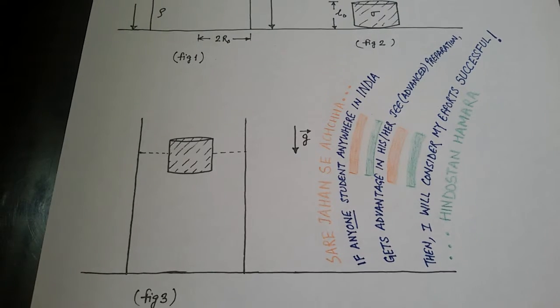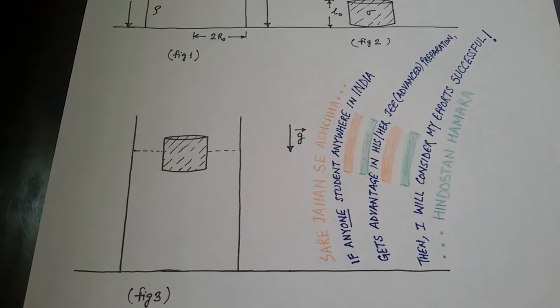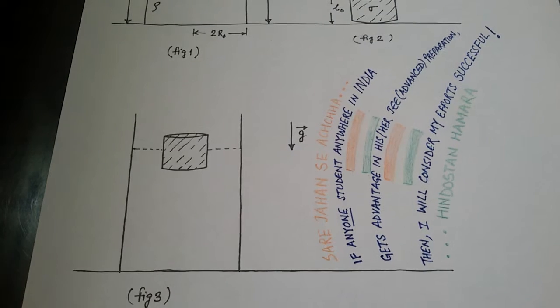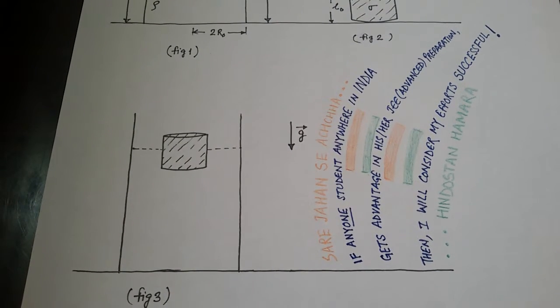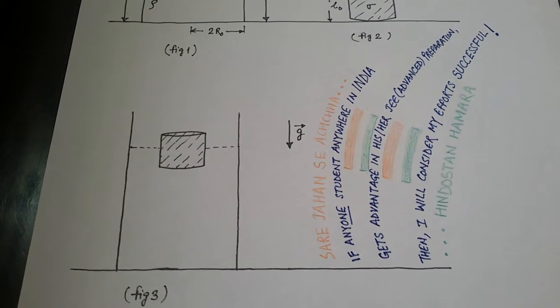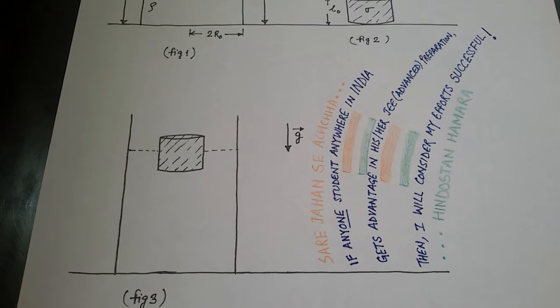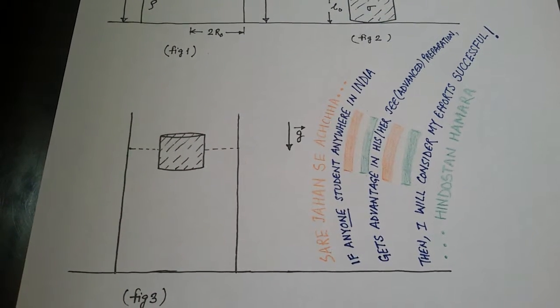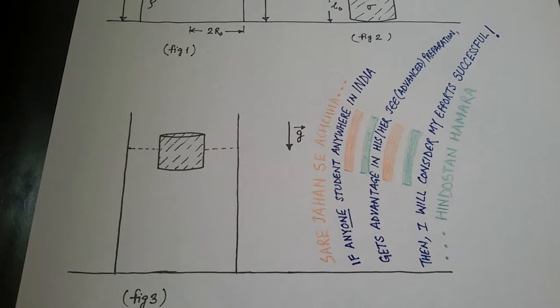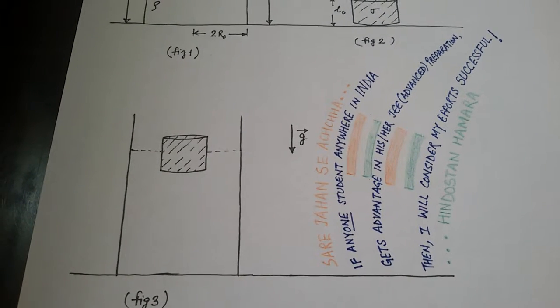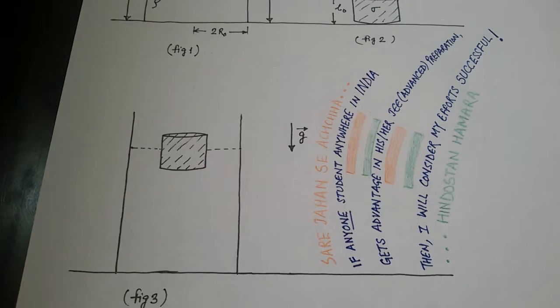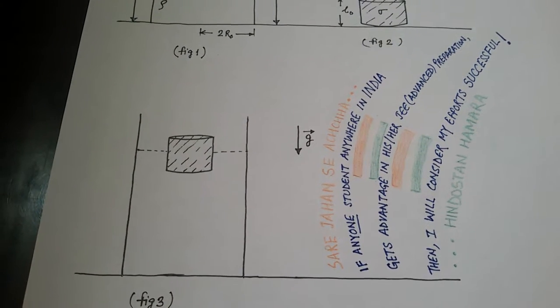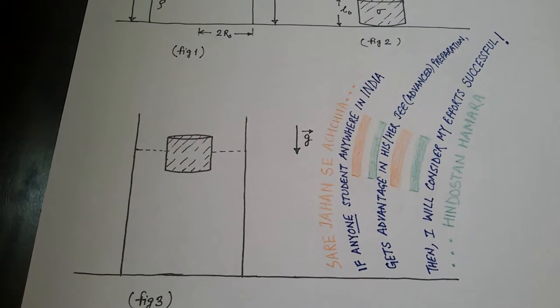The block is depressed further into liquid so that upper surface of block is above the liquid surface. The block is then released. The block performs simple harmonic motion without damping. The block remains vertical at all times. There is no loss of energy due to frictional effects.